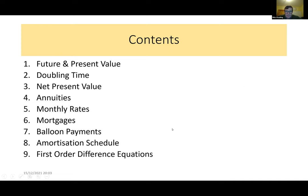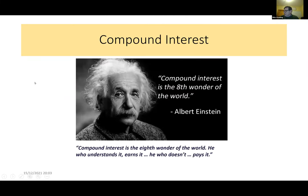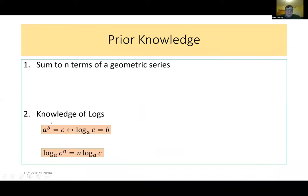We begin with Einstein, who called compound interest the eighth wonder of the world because of how quickly it grows. If you invest at a compound interest rate, it grows pretty quickly over time — exponentially, in fact. The prior knowledge students need to tackle these questions includes geometric sequences and series, in particular the geometric series formula: Sn equals a times (1 minus r to the n) all over (1 minus r).